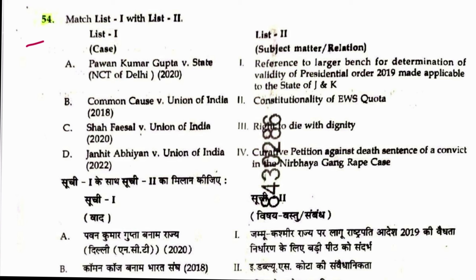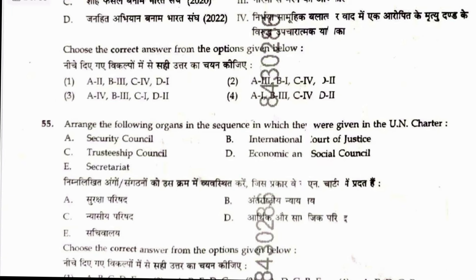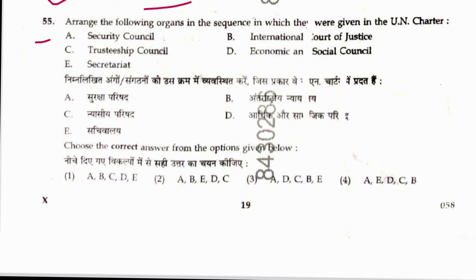Question 54: Match the list. Pawan Kumar Gupta vs. State of NCT Delhi — Pawan Kumar Gupta case. Common Cause vs. Union of India is on right to die with dignity. Shah Faesal vs. Union of India refers to a larger bench for determination of validity of Presidential Order 2019 made applicable to the state of J&K. The EWS quota case — the answer sequence is 4, 3, 1, 2, so answer is 3.